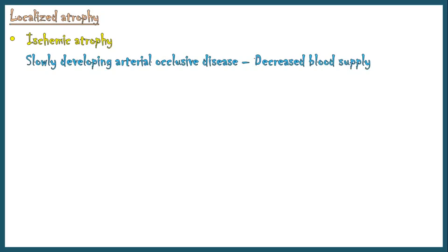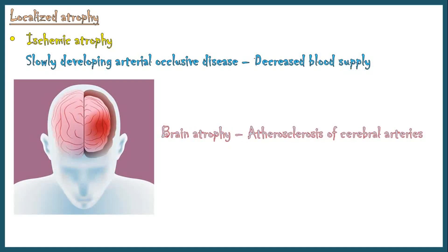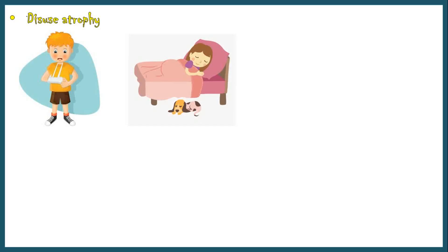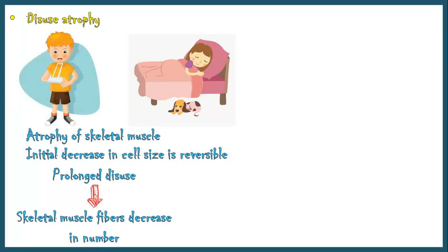Ischemic atrophy occurs due to slowly developing arterial occlusive disease which decreases the blood supply to an organ; brain atrophy following atherosclerosis of cerebral arteries is an example. Disuse atrophy occurs when a fractured bone is immobilized in a plaster cast or when a patient is restricted to complete bed rest. Skeletal muscle atrophy is prominent, and the initial decrease in cell size is reversible. However, with prolonged disuse, the number of skeletal muscle fibers decreases due to apoptosis, and prolonged disuse is also associated with increased bone resorption leading to osteoporosis of disuse.